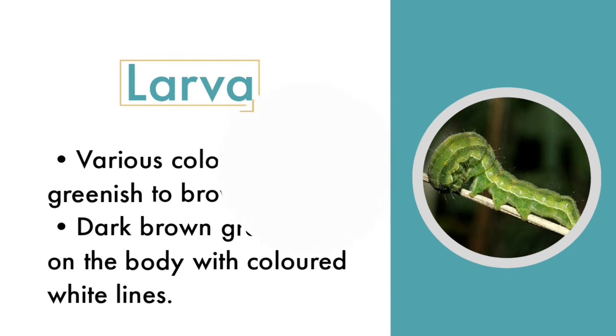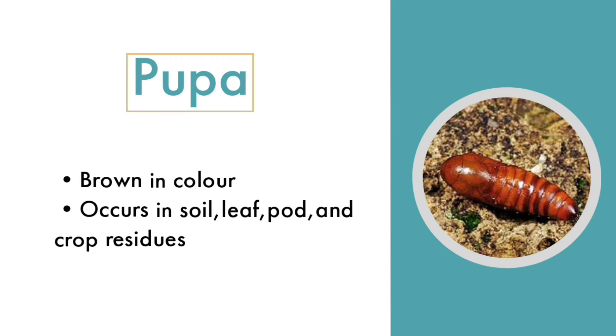The pupa is found in soil, leaf, pod, and crop debris. Generally, the pupa is brown in color and the life period of the pupa is 14 days.